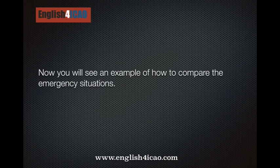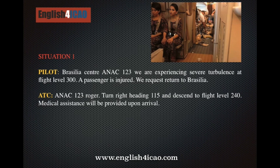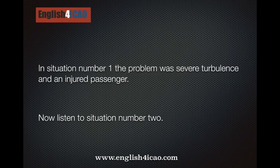Now you will see an example of how to compare the emergency situations. Situation 1: 'Brazilia center, ANAC 123, we are experiencing severe turbulence at flight level 300. A passenger is injured, we request to return to Brazilia.' Controller responds: 'ANAC 123 roger, turn right heading 115 and descend to flight level 240. Medical assistance will be provided upon arrival.' In situation number 1, the problem was severe turbulence and an injured passenger.